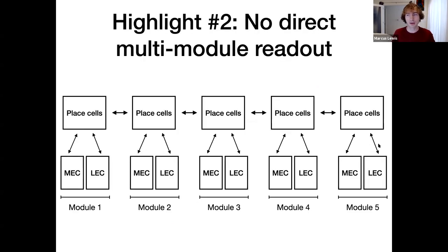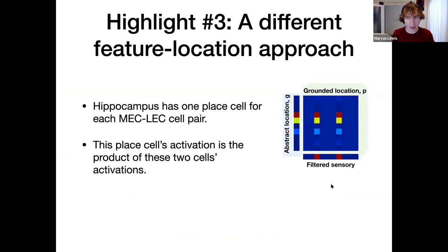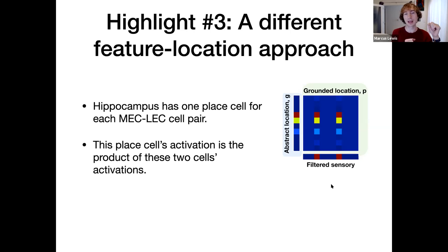Some quick review on what we talked about last week — this is copy-pasted from my last presentation. The model of the hippocampus and entorhinal cortex: the top place cells form an auto-associative attractor network storing feature-location pairs, location-sensory pairs. The bottom medial entorhinal cortex is grid cells and lateral is sensory input. They have different temporal scales on the sensory input, with a smoothing input on the sensory side. As you go to the right, the scales of the grids get larger.